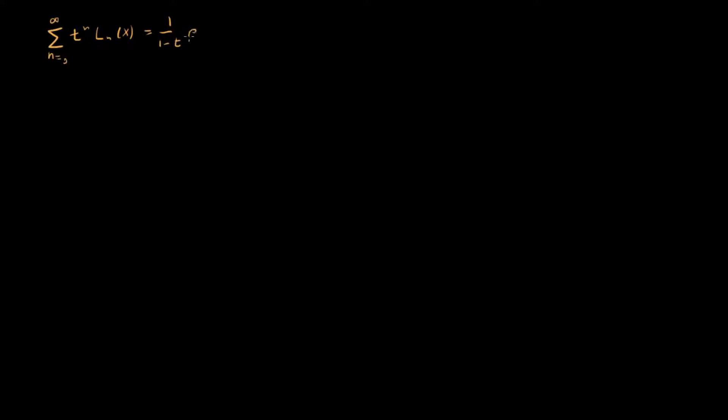Last time we looked at the generating function for Laguerre polynomials and what we were able to show was that this series, which has as its coefficients Laguerre polynomials, is equal to 1 over (1 minus t) times e to the minus tx over (1 minus t). Now what I want to do is use this fact in order to derive a recurrence relationship for Laguerre polynomials.